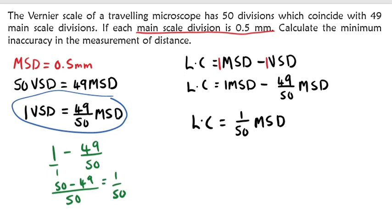We know that the main scale division is 0.5 millimeters. Let's replace it here. Our least count will be 1 over 50, and where we have the main scale division, we replace it with the value being given, which is 0.5 millimeters.